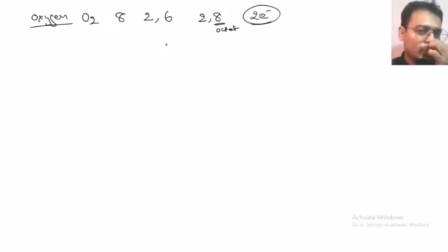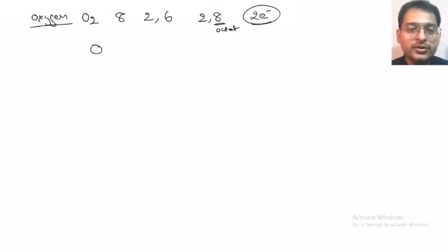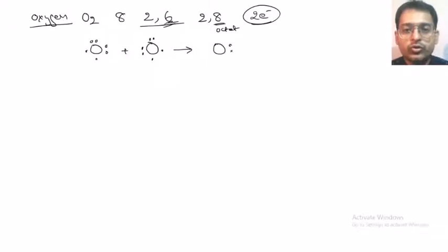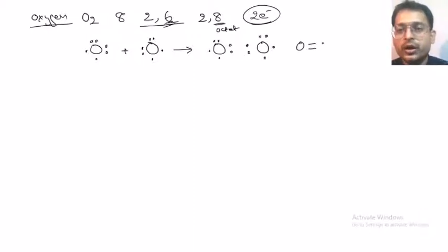How is oxygen going to get these two more electrons? Let us draw the Lewis structure. For oxygen we will be showing the valence shell electrons — 1, 2, 3, 4, 5, 6. It is going to combine with another atom of oxygen and it is going to share two pairs of electrons to form the oxygen molecule. Two pairs of electrons means two covalent bonds.